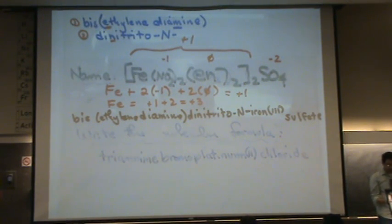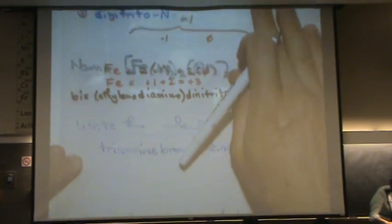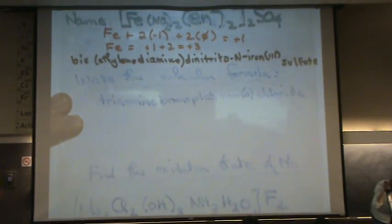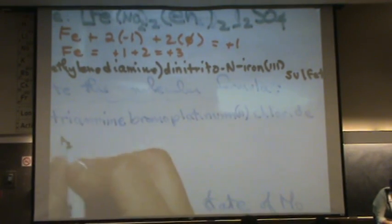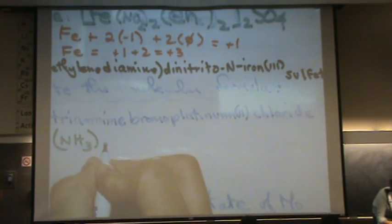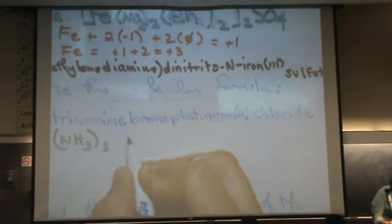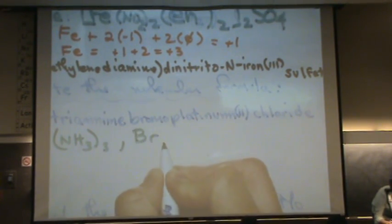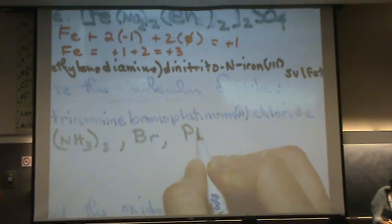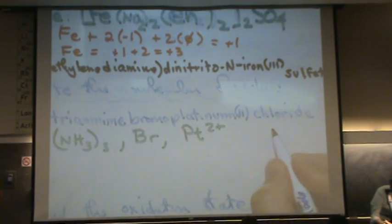We're going to go backwards now. Now we've got the name, so we want the chemical or molecular formula. So we've got triamine. Let's just take it in pieces. Triamine. NH3. Three. We've got a bromo. That sounds like just one of them. And we've got platinum. Two plus charge. And then we have the counter ion. Chlorine. Cl minus.